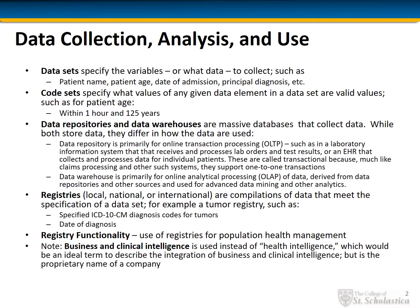Data are maintained in certain types of structures depending on the primary use of the data. Data repositories and data warehouses are massive databases that collect data. While both store data, they differ in how the data are used. A data repository is primarily for online transaction processing, or OLTP, such as in a laboratory information system that receives and processes lab orders and test results, or an EHR that collects and processes data for individual patients. These are called transactional because, like claims processing, they support one-to-one transactions.